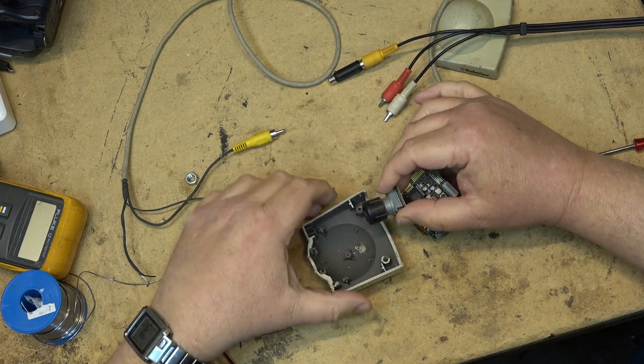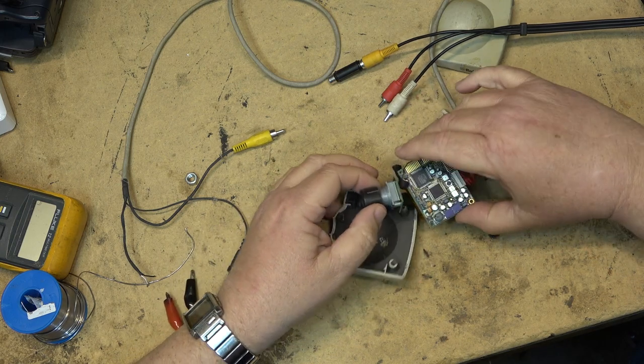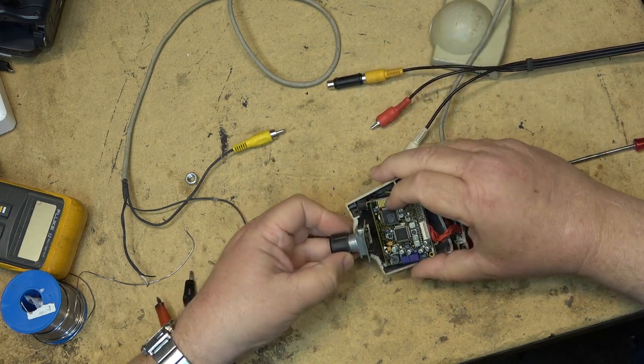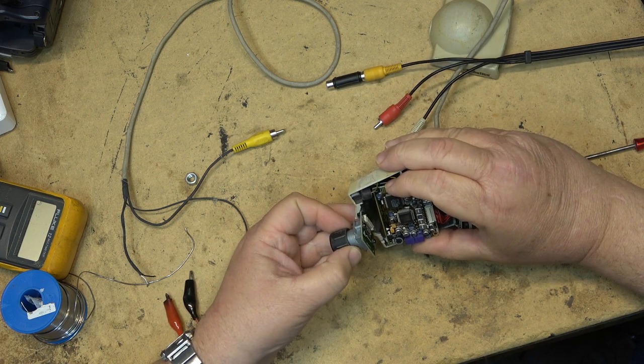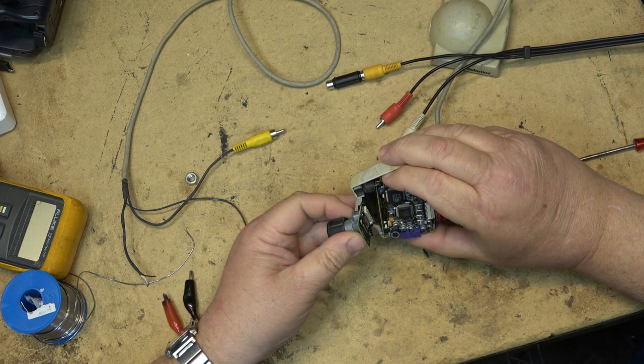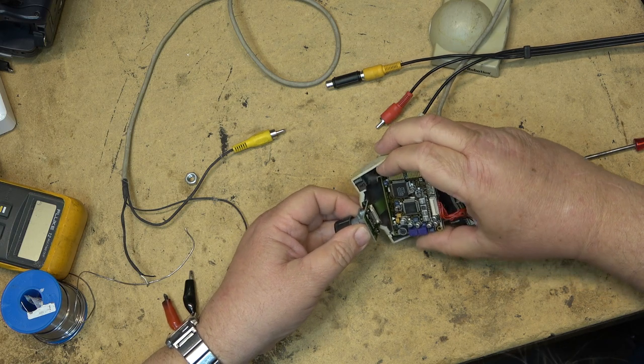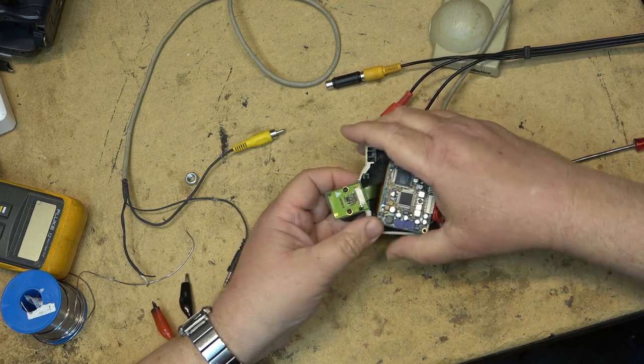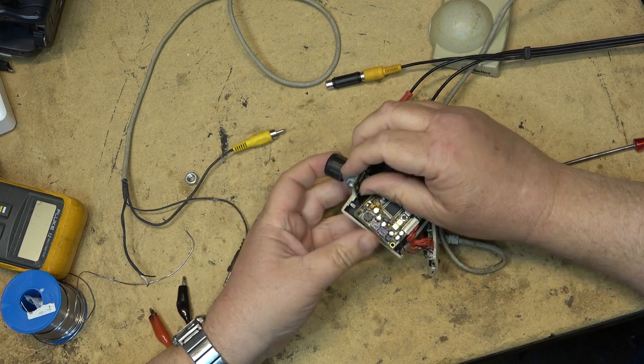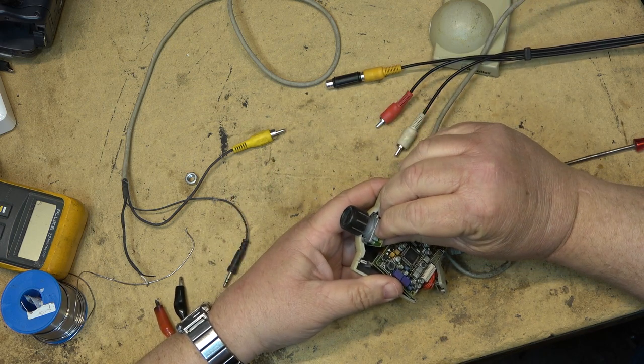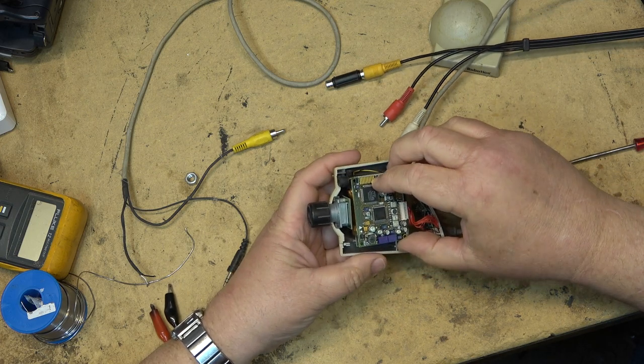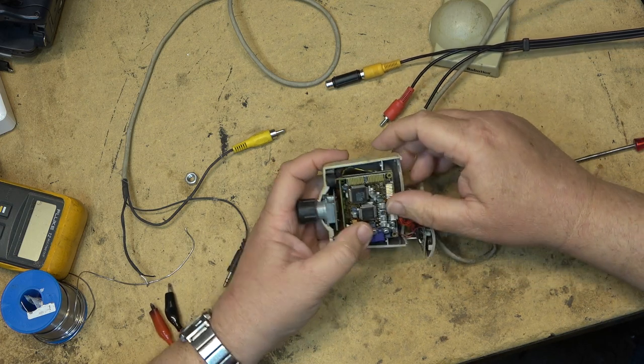This can focus in pretty close with this lens. It can unscrew like it does. Now this piece goes down in like that, slides into that slot. As I reattach the ribbon connector, the camera board fits in.